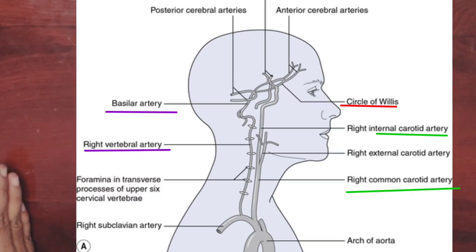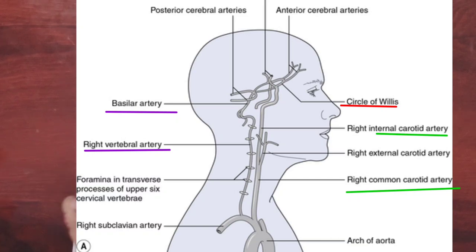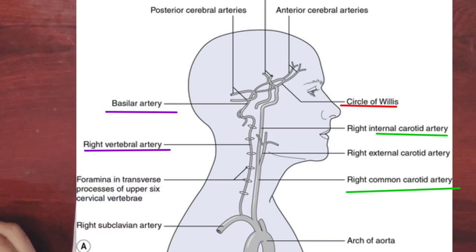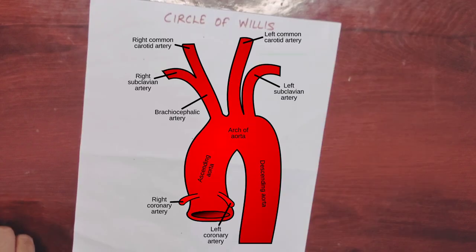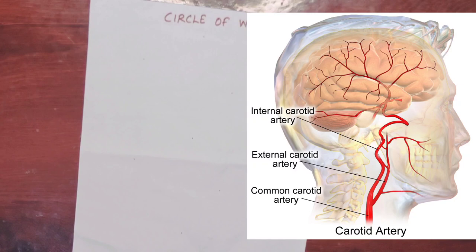There is an artery in the anterior and an artery in the posterior. If we look at the anterior, there is a common carotid artery. Looking further at the anterior, there is an internal carotid artery and the external carotid artery.